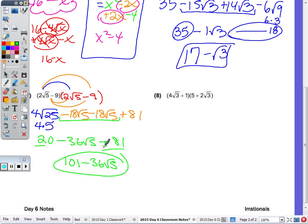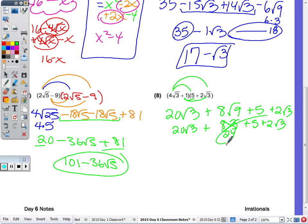Last one. It's especially nice when there's a 1 in your binomial, because 1 times anything is itself. So 4 radical 3 times 5 is 20 radical 3. Outside is going to be 4 times 2 is 8, 3 times 3 is 9, or 8 times 3. Then this is going to be 1 times 5 is 5, 1 times 2 radical 3 is 2 radical 3. So we have 20 radical 3 plus 24 plus 5 plus 2 radical 3. Can combine those that aren't radicals to get 29 plus 22 radical 3.